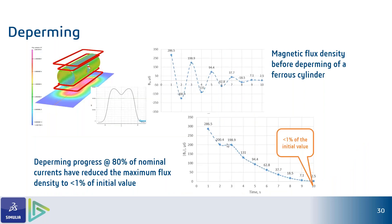Deperming is another phenomenon in ship operations where permeable materials align with Earth's magnetic field and become permanently magnetized, creating issues with static electricity and other problems. For example, a submarine requires deperming once every six months, but simulation can be used to optimize and predict the best time for a submarine or large barge to be depermed.